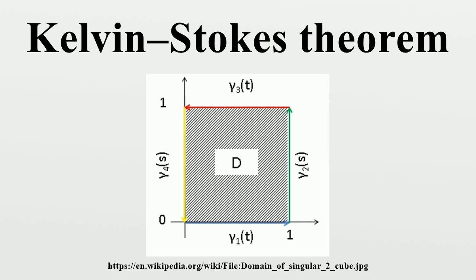Let γ: [A, B] → R² be a piecewise smooth Jordan plane curve. The Jordan curve theorem implies that γ divides R² into two components, a compact one and another that is non-compact.